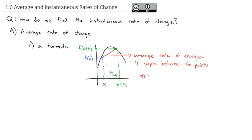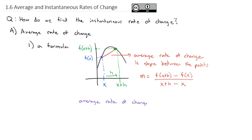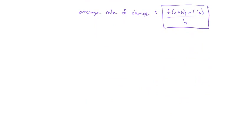We know how to calculate slope. We take the second y, which was f(x+h), minus the first y, which was f(x), all over the second x, x plus h, minus the first x, which is x. In the denominator we've really got h after the x's cancel. So the average rate of change is given by f(x+h) minus f(x), all over h. This is going to be one of the most important formulas as we continue moving forward.